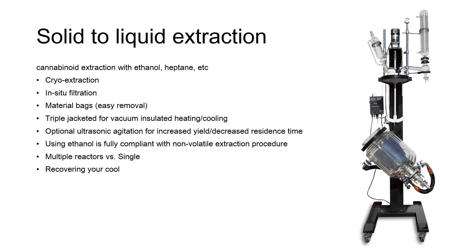If you were to get any small amount of waxes in your extraction, it has built-in filters so you could filter it when you actually drain it out. The reactors will also come with material bags — you could just throw all your material into a bag and then put the bag inside the reactor itself, making it real easy to remove everything from the reactor. The triple jacketing not only allows for really good vacuum insulation, but it allows you to see the inner contents the whole time — it's not going to freeze over or fog up.